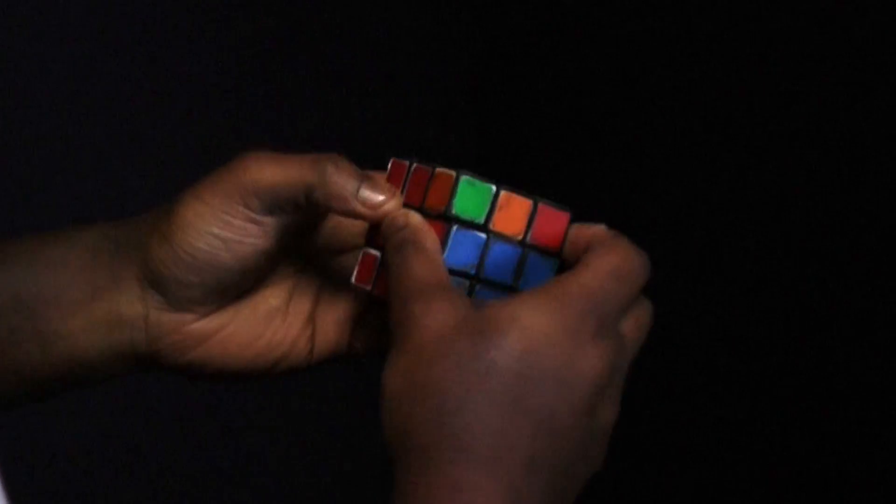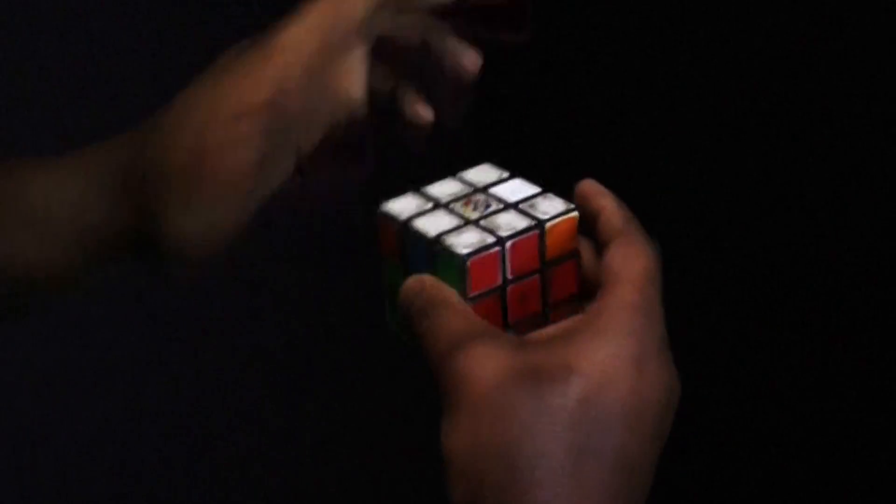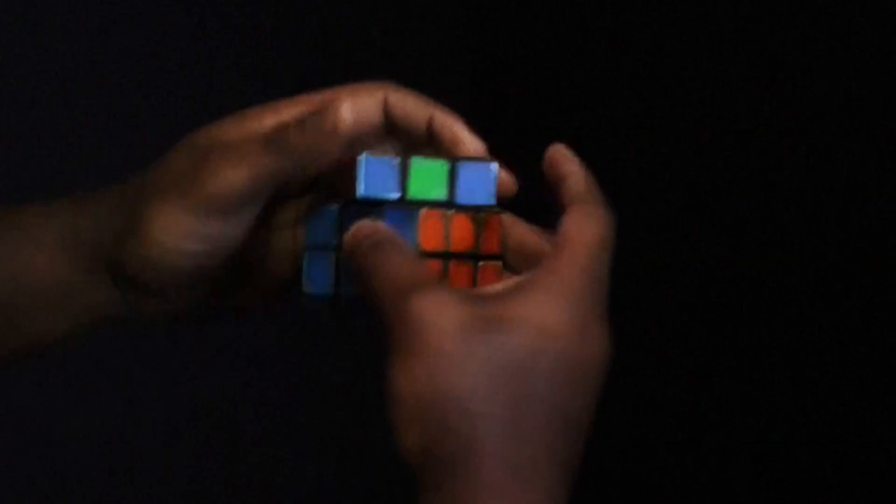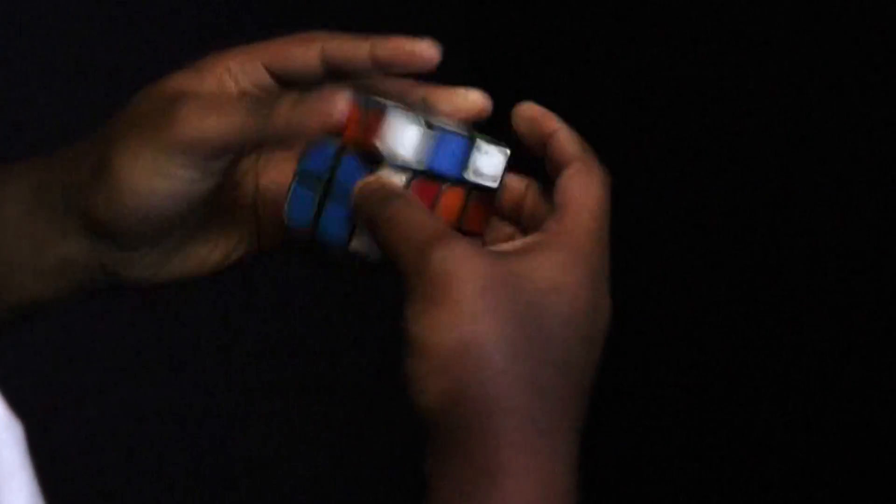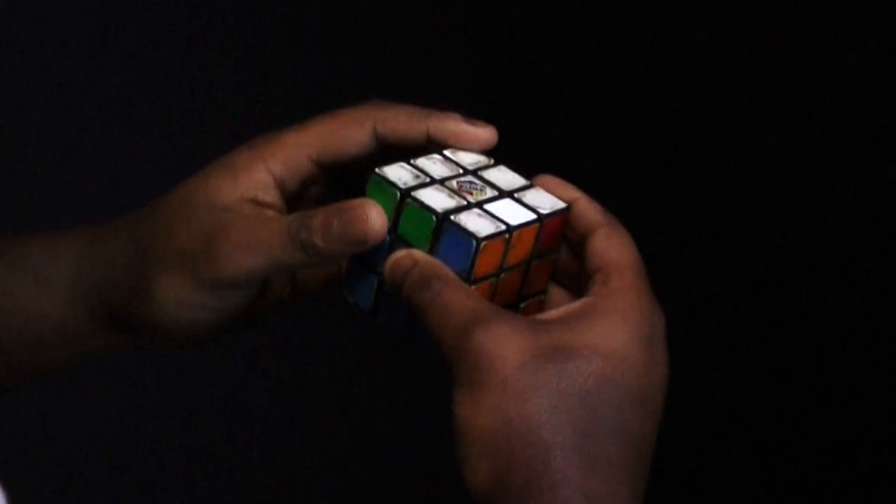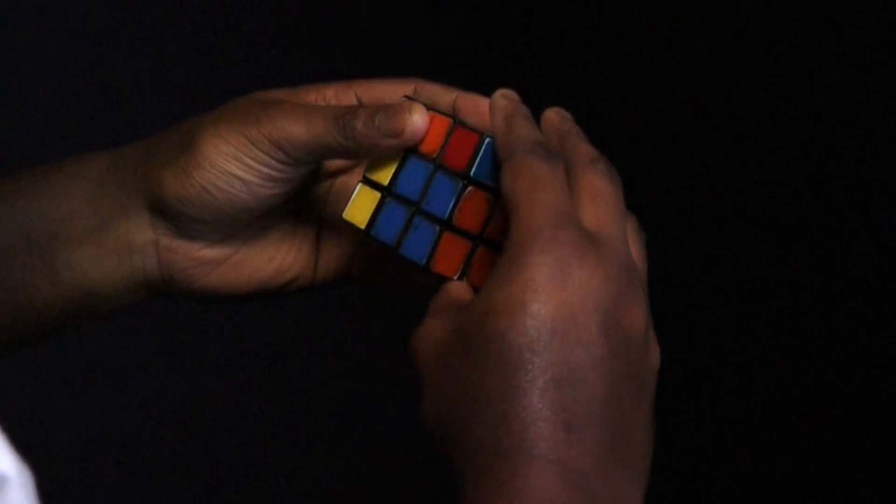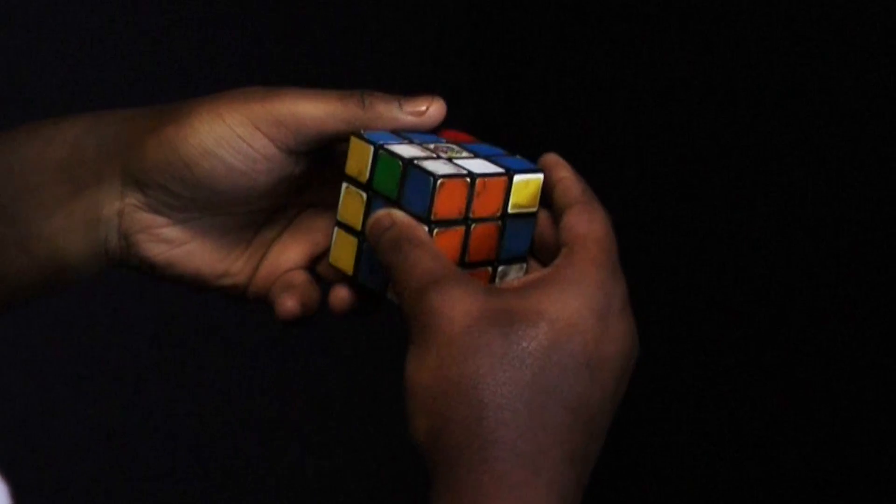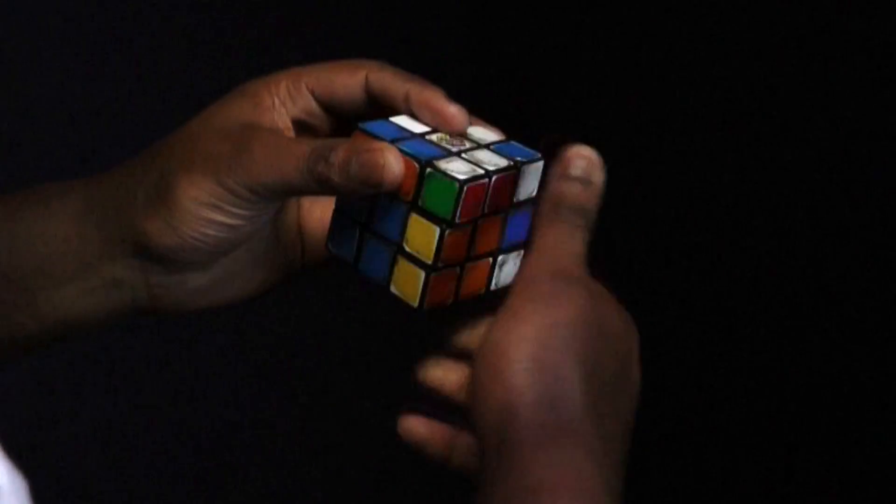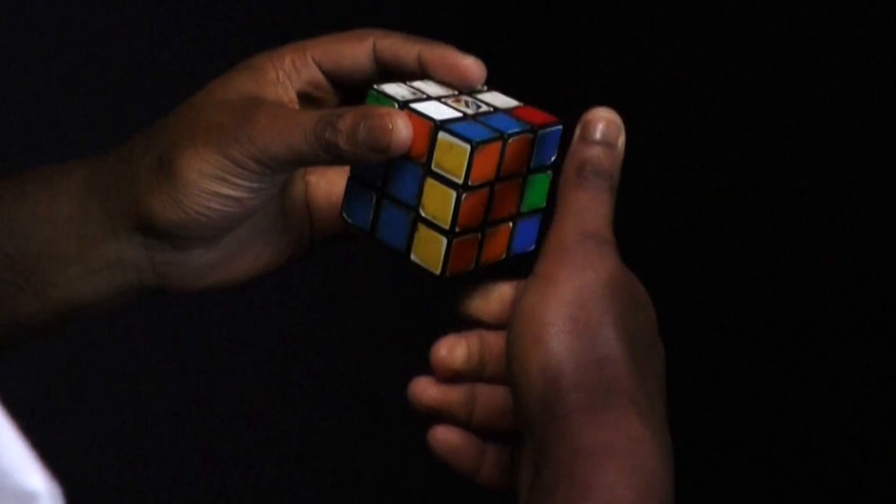Now, we're on the corners. We need to do the corners. And then we need to do these edges. And then it's solved. If you've got no corners matching at all, you need the following algorithm to help you. Left prime. U. R U prime. Left. Up twice. Right prime. Up. Right. Up twice. Right prime.